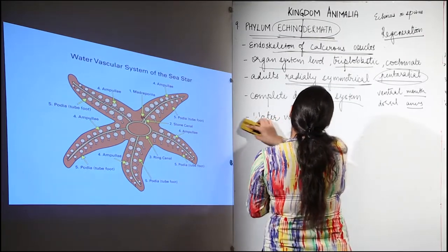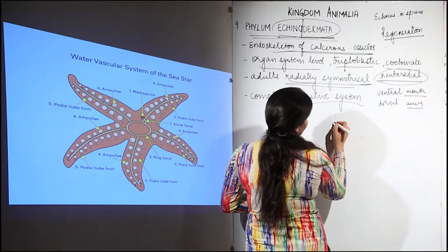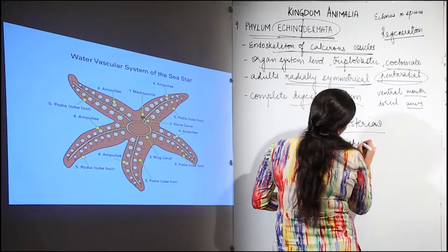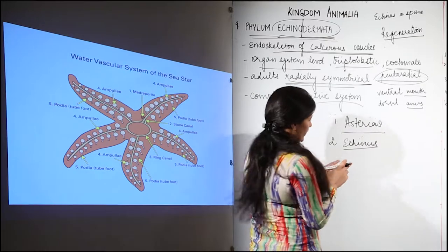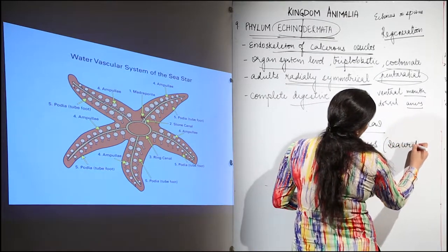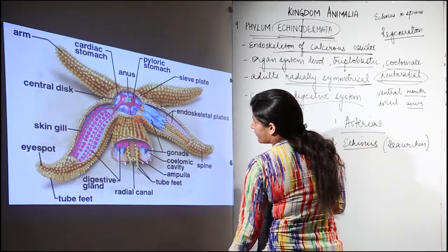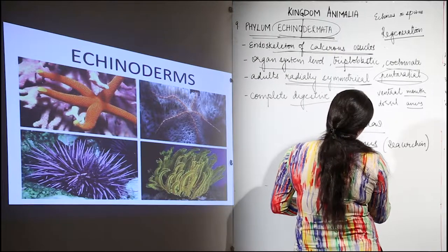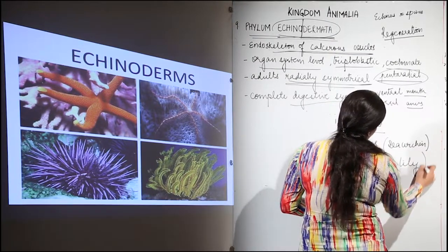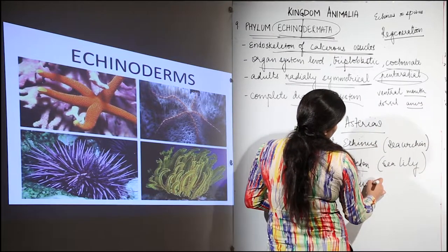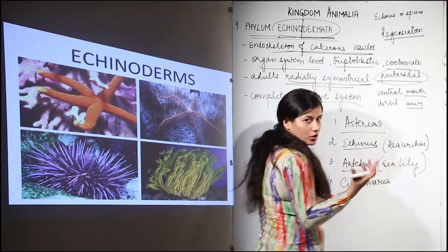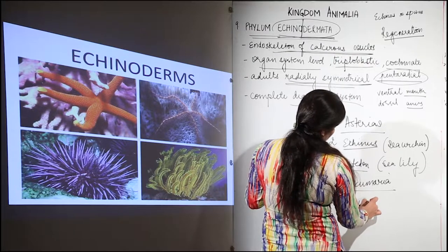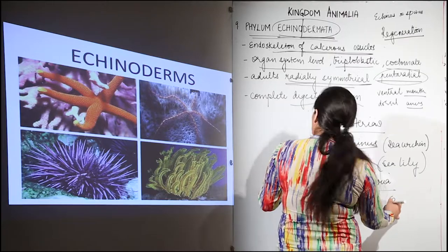Now we look at examples. The first is Asterias — the starfish or sea star. The second is Echinus, also known as Aristotle's lantern or sea urchin — the picture shown at the beginning was a sea urchin. Then we have Antedon, which is the sea lily. All these have spines on their body. Next is Cucumaria, the sea cucumber — easy to remember by its common name. Finally, Ophiura is the brittle star, shown here.